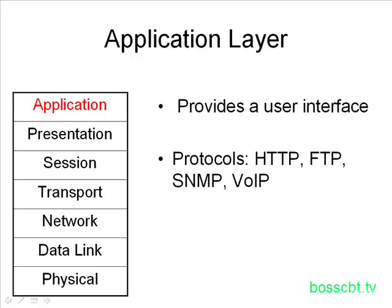Some examples of protocols that you'll find on the application layer are HTTP for going to websites, FTP, SNMP, and even Voice over IP. Those are the main characteristics and attributes of the application layer.